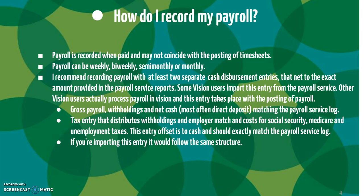If I were to set up two entries, one entry would be the gross payroll — the withholdings and net cash, most often direct deposit — matching the payroll service log. My second entry would be the tax entry that distributes withholdings and employer match and costs for Social Security, Medicare, and unemployment taxes. This entry offset is to cash and should exactly match the payroll service log. If you're importing this entry, it would follow the same structure and you would tell your payroll service company.